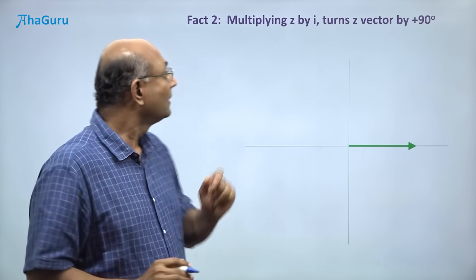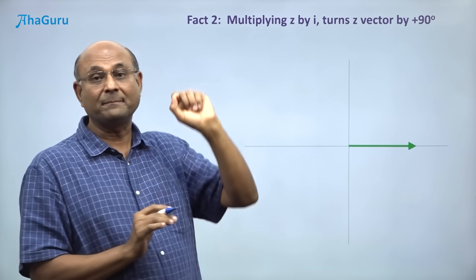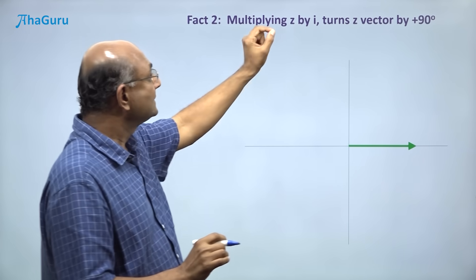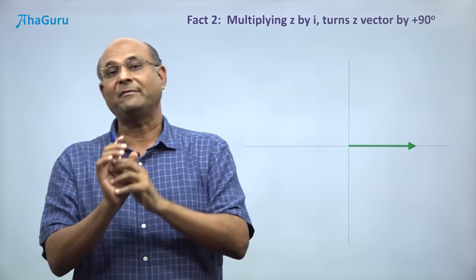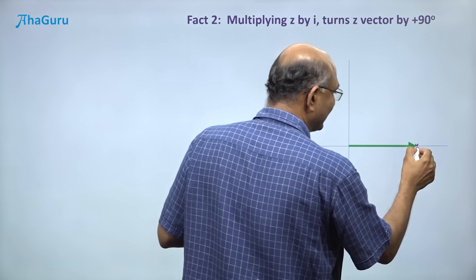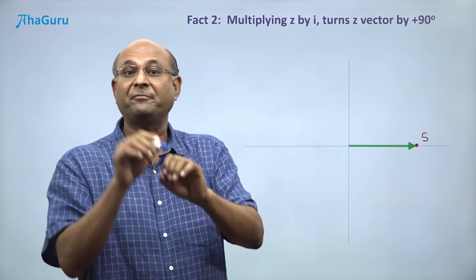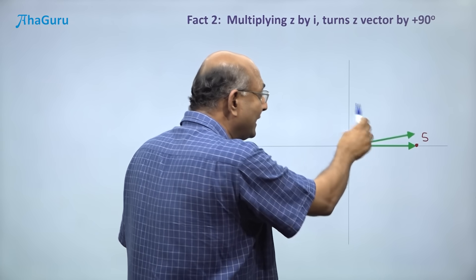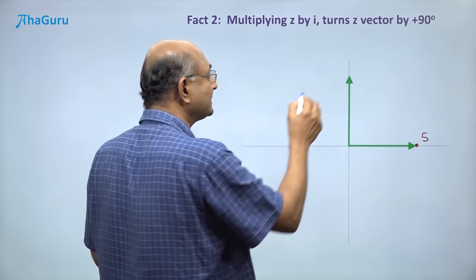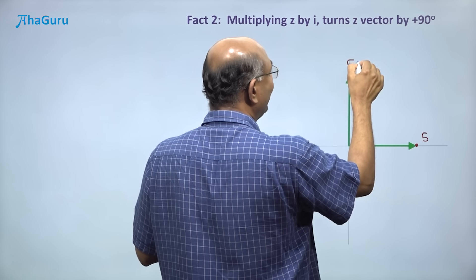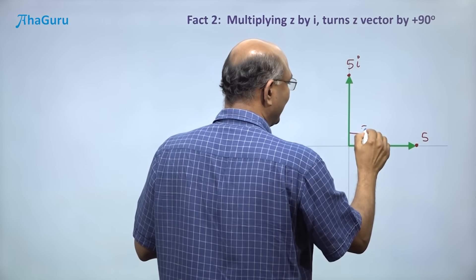Fact 2: Multiplying a complex number z by i simply means that you are turning that z vector by 90 degrees. If I pick this point, let's call this point as 5 on the x-axis. If I multiply 5 by i, I am turning this arrow by 90 degrees. This point is 5i and this is 90 degrees.